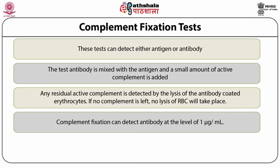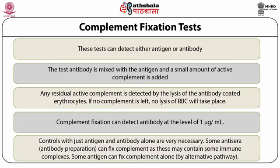By using a constant amount of antibody, one can estimate antigen instead in a given sample. Controls with just antigen and antibody alone are very necessary. Some antiserum can fix complement as these may contain some immune complexes. Some antigen can fix complement alone by an alternative pathway for complement activation.